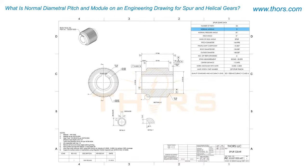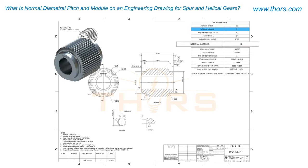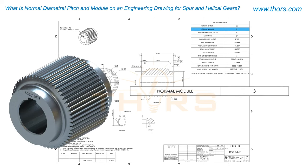On a metric gear drawing, the normal diametral pitch is replaced by the normal module in the gear data block.